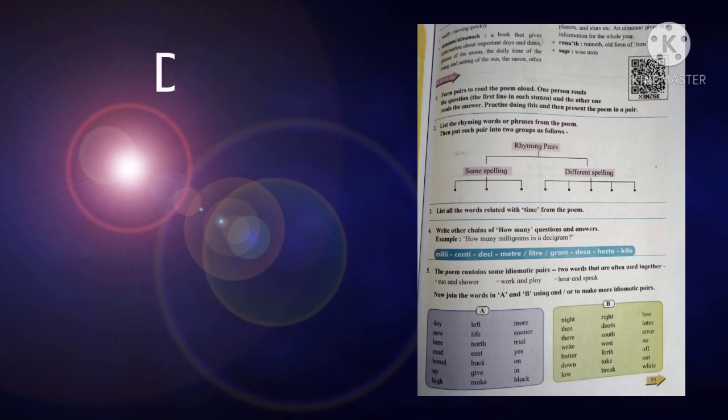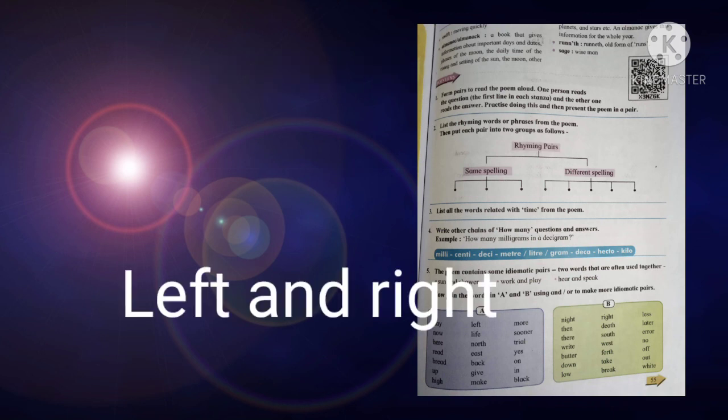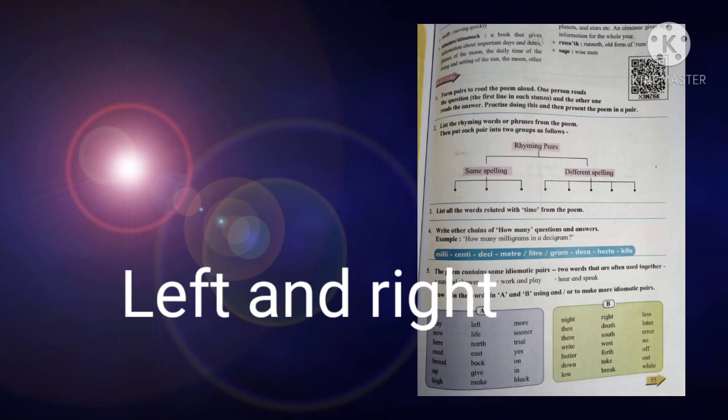So you have to join words in A and B using 'and' or 'or' to make more idiomatic pairs. For example: day and night, left and right, more and less, now and then, life and death, sooner and later. So in this way you can prepare these pair words with the help of these two groups. Very easy, take one word from A group and join with word from B group.